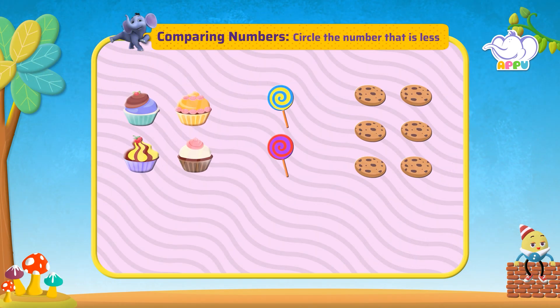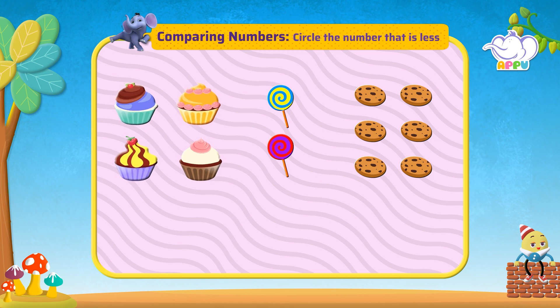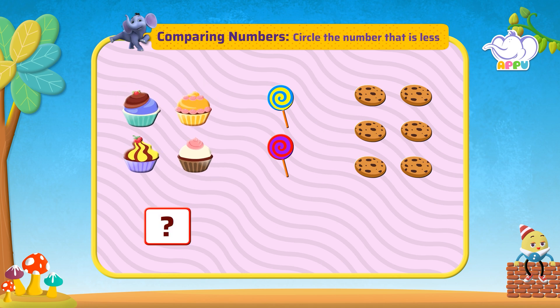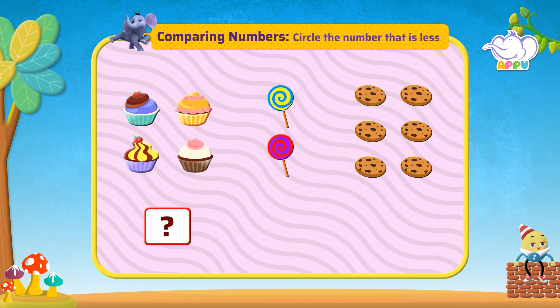Look at the pictures and circle the number that is less. How many cupcakes in this picture? One, two, three, four. Four cupcakes. How many candies in this picture?